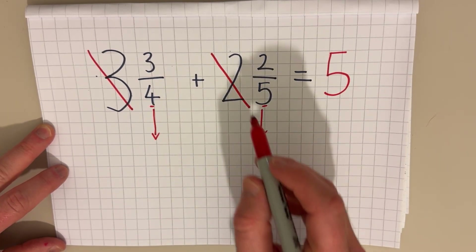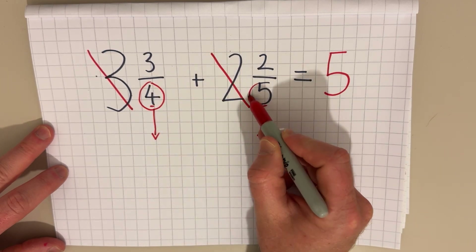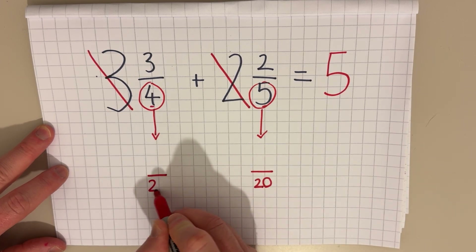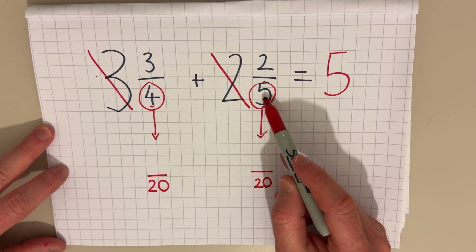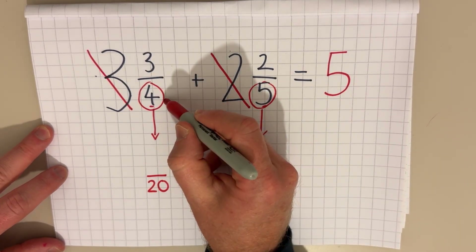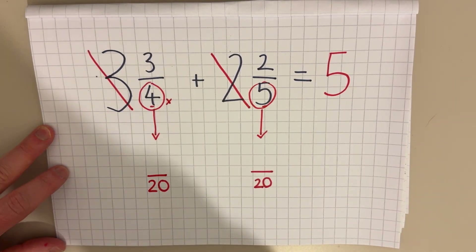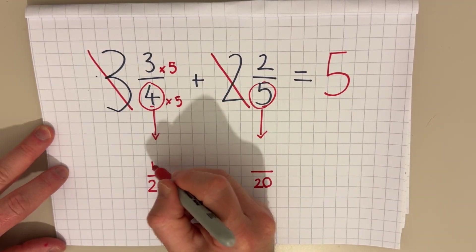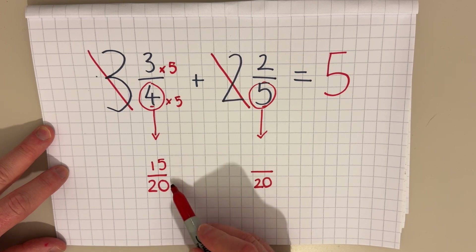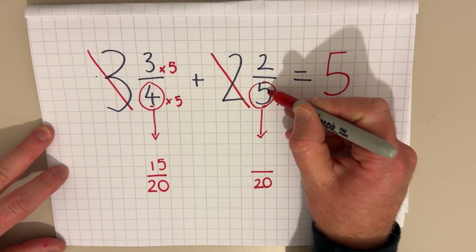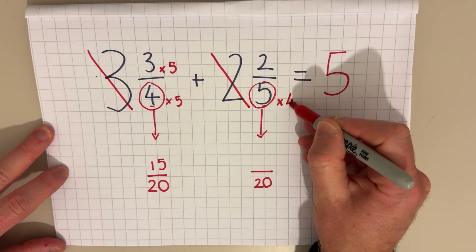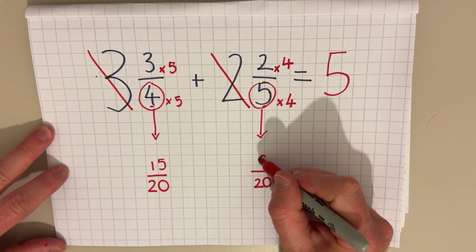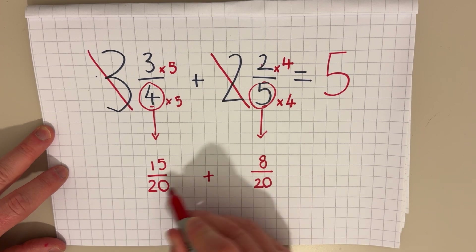I need to change three quarters and two fifths to a common denominator. I'm going to change them into twentieths because four is in the 20 times table and five is in the 20 times table. I multiplied four by five to make 20, so I also multiply the numerator by five: three times five is fifteen — three quarters becomes fifteen twentieths. I multiplied five by four to make 20, so I multiply the numerator by four: two times four is eight — two fifths becomes eight twentieths.